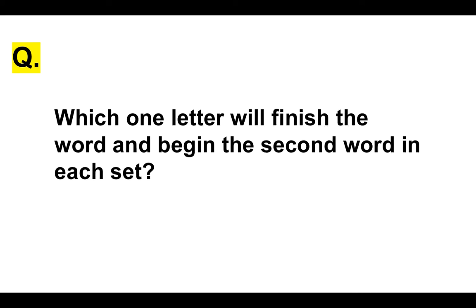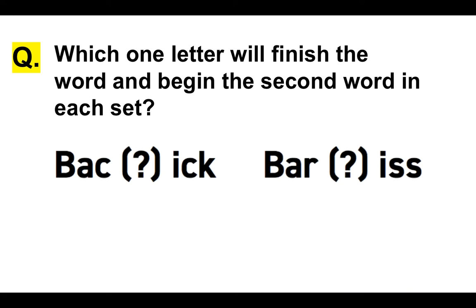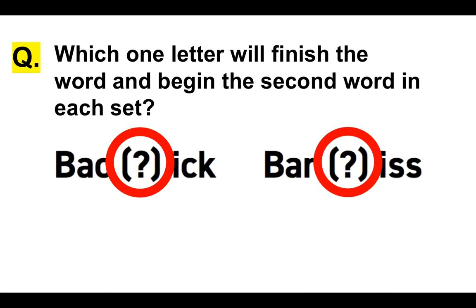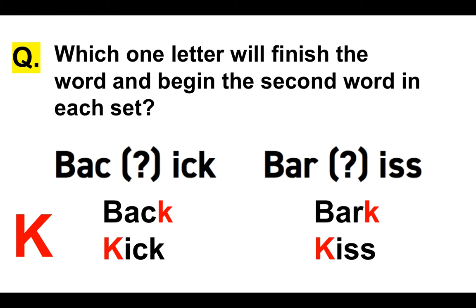Let's move on to a different type of question. Another kind of IQ and aptitude test question: which one letter will finish the word and begin the second word in each set? We have four words: B-A-C and then something, then something-I-C-K, and B-A-R-something, then something-I-S-S. We have to work out what one letter goes in both blanks — the same letter, not two different ones. The only letter that works is K: you get BACK and KICK, then BARK and KISS.